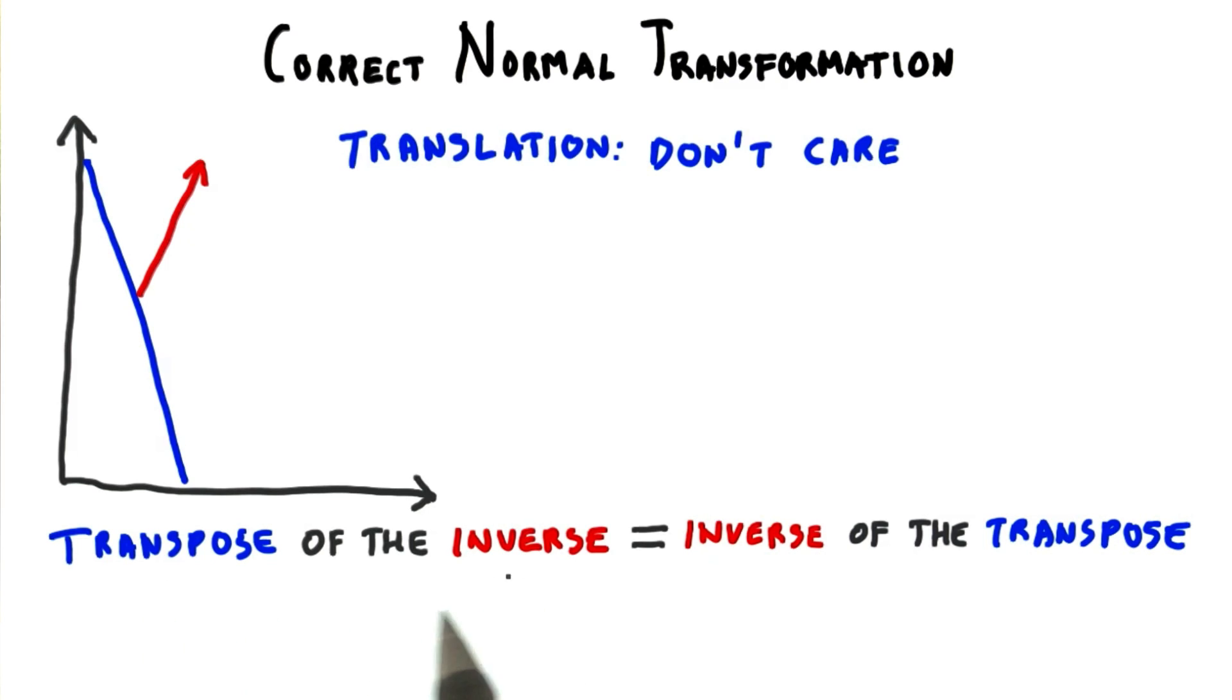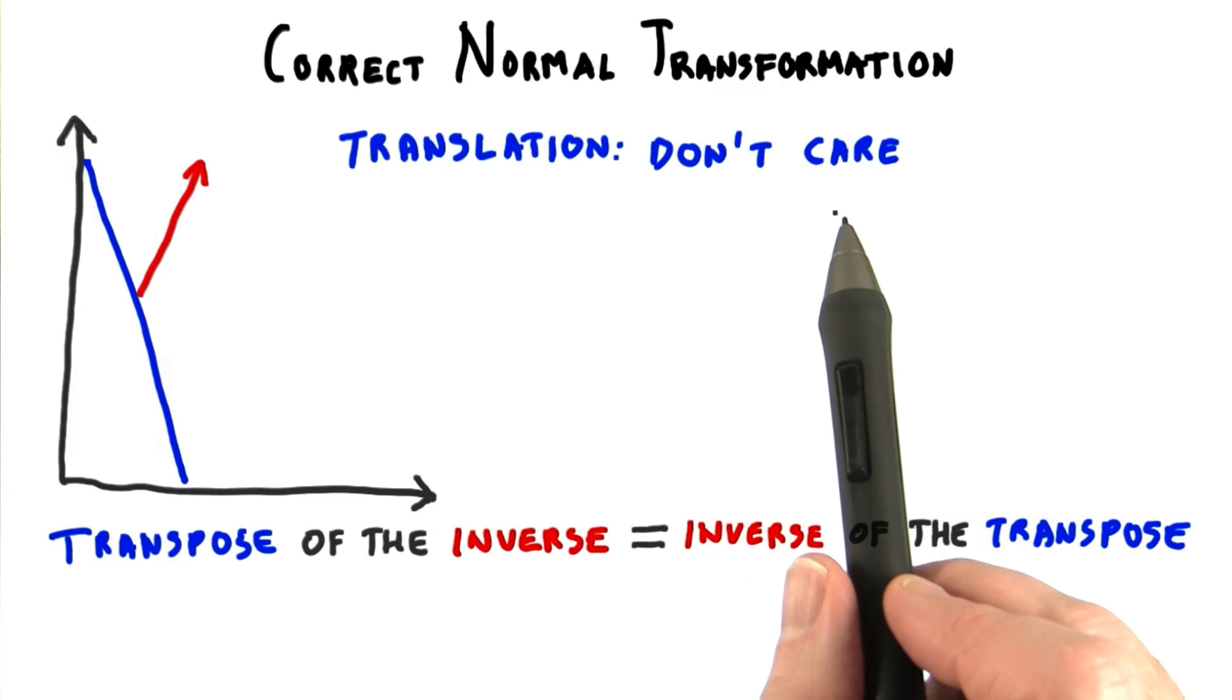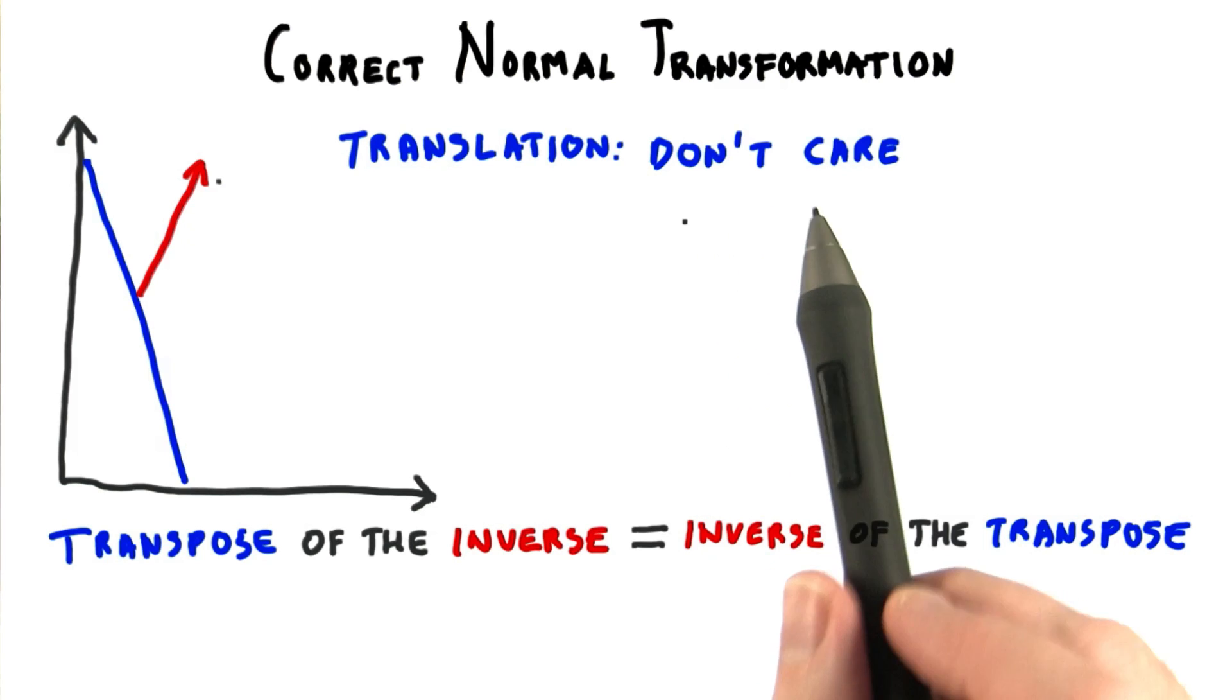Let's look at how this solution applies to each different kind of transform that we're used to. First of all, forget about translation matrices. We're going to be transforming normals, and translation matrices do not affect vectors in any way.